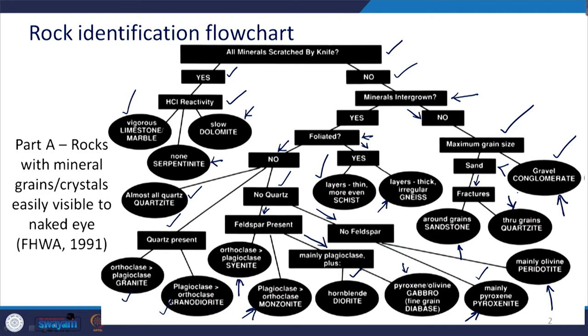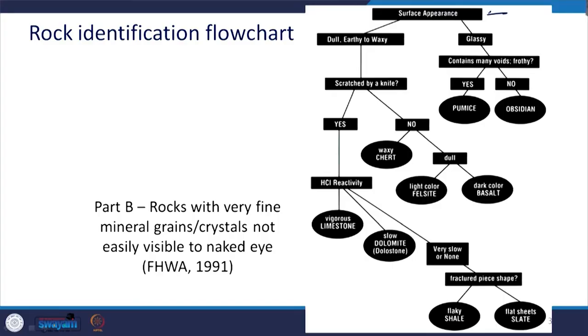Based upon the presence of different minerals, this is how we can identify rocks that have sufficiently large mineral grains or crystals which we can see with our eyes. Coming to the next category, where we cannot see these grains or crystals by our eyes, we have to take into account the surface appearance.